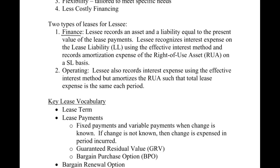Under the old standard, before they changed this recently, it was called a capital lease and an operating lease. They've restructured how we account for this. Under the finance lease, the lessee — remember the lessee is the one that uses it — records an asset and a liability equal to the present value of the lease payments. We'll need to define lease payments in a minute, but anytime you see present value, you'll be calculating that.